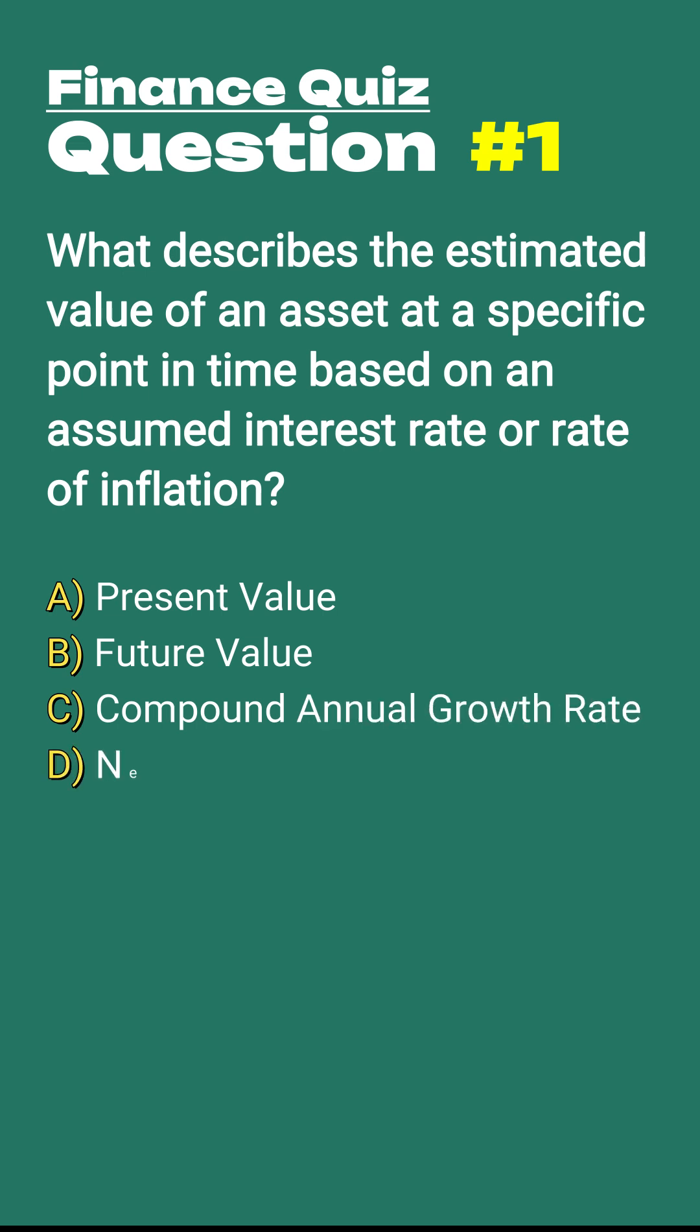A, present value. B, future value. C, compound annual growth rate. D, net present value.